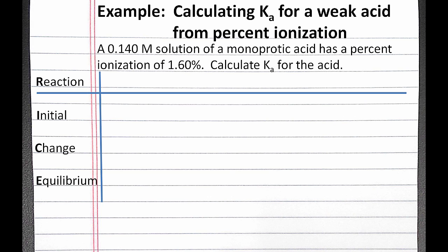Our first step is to create a RICE table. Since we're not given the weak acid, we'll use a general equation for the ionization of a weak acid. Our initial concentration of the weak acid is 0.140 molar. We don't need to keep track of water because it's a pure liquid. The initial concentration of our hydronium ion is 1 times 10 to the negative 7th because of the autoionization of water. In this problem, we can approximate it as 0. And the initial concentration of our conjugate base is 0.